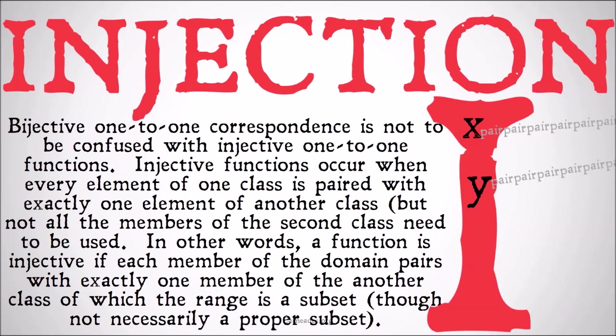Bijective one-to-one correspondence is not to be confused with injective one-to-one functions. Injective functions occur when every element of one class is paired with exactly one element of another class, but not all the members of the second class need to be used. In other words, a function is injective if each member of the domain pairs with exactly one member of another class of which the range is a subset, though not necessarily a proper subset, and every member of that range pairs with only at most one member of the domain, though possibly zero members of the domain.